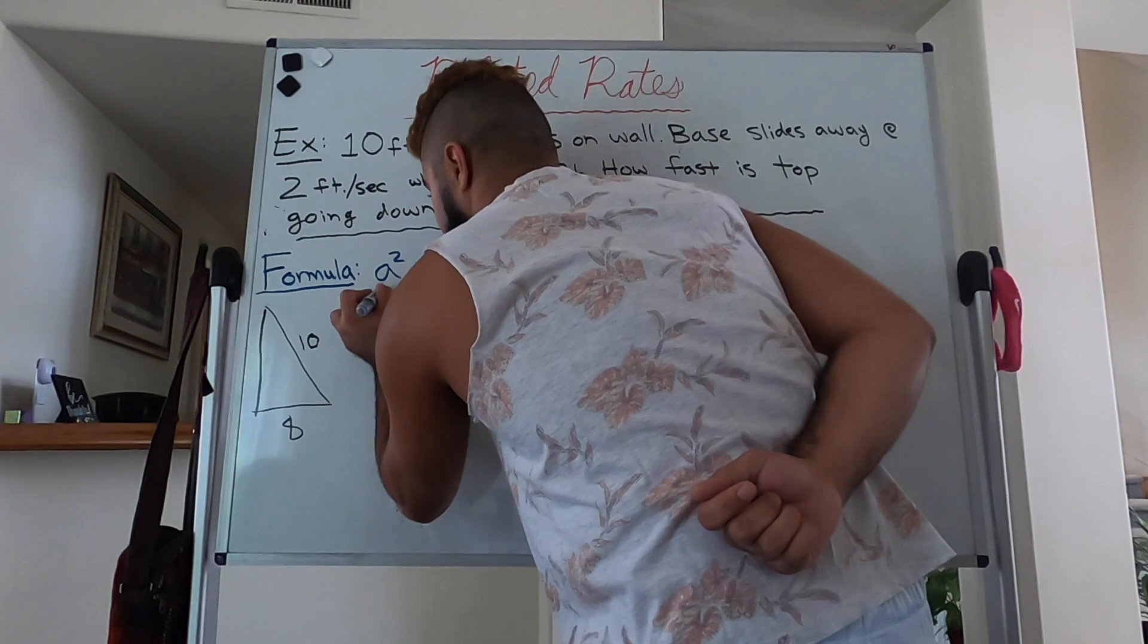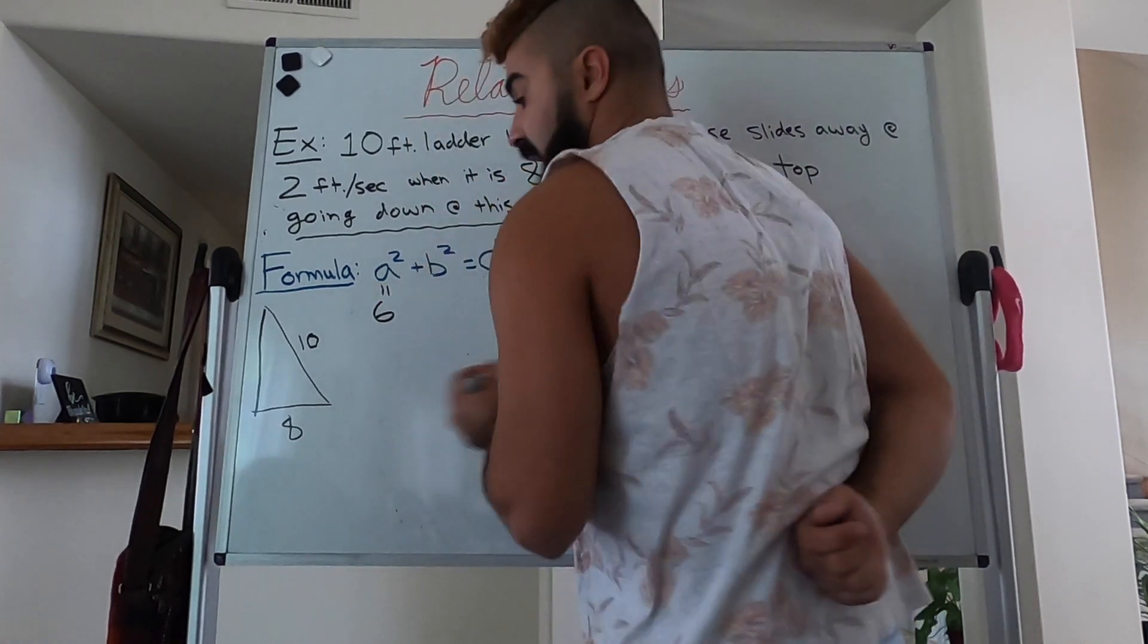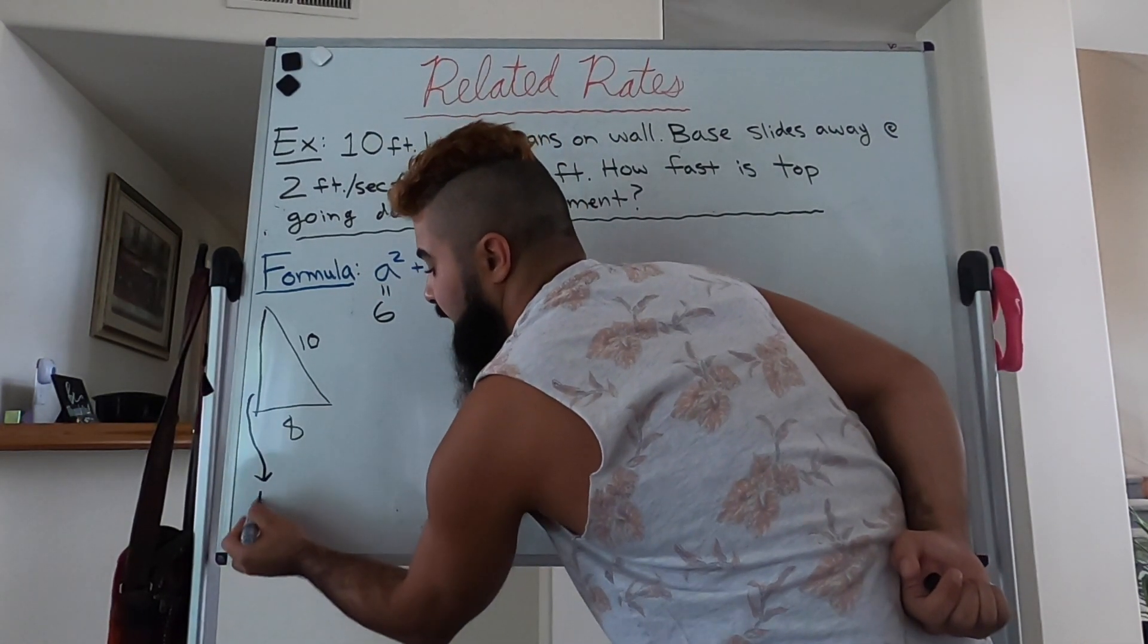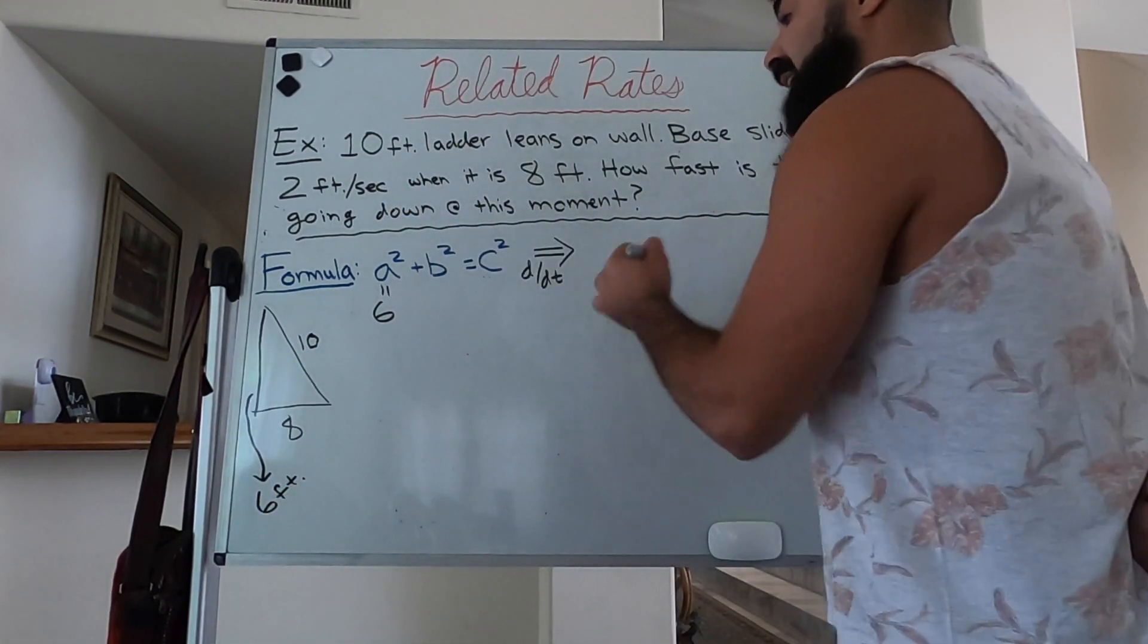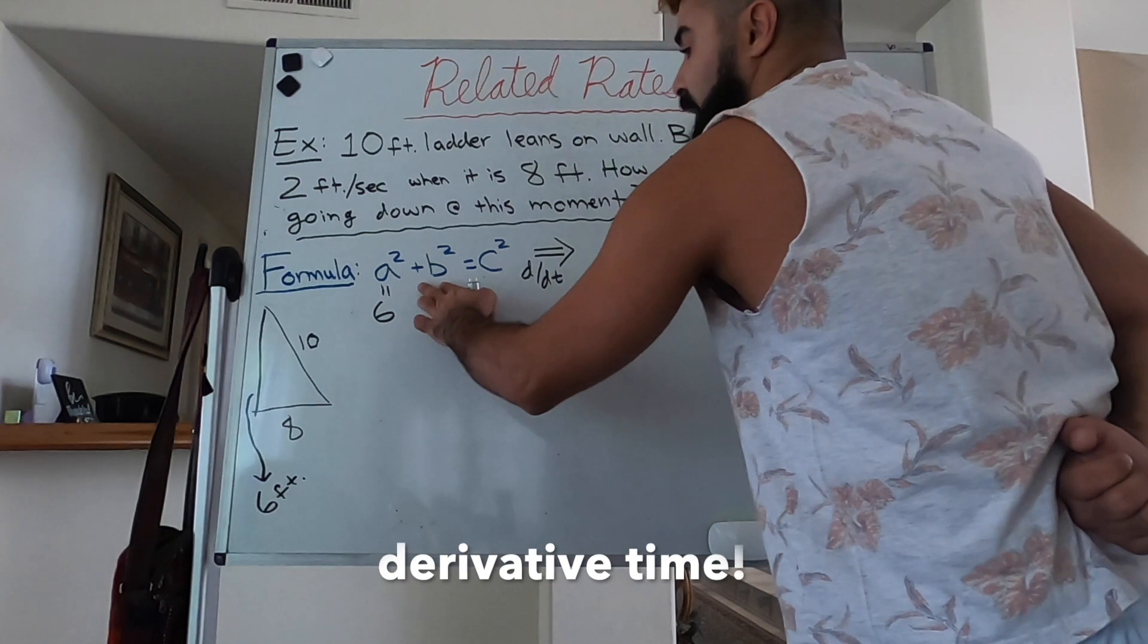The first thing we need to do, we need to see what that missing side is. So this missing side right here is 6 feet. All right, next thing we're going to do is we are going to differentiate our formula with respect to the time variable, d/dt.